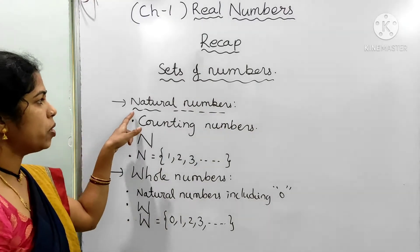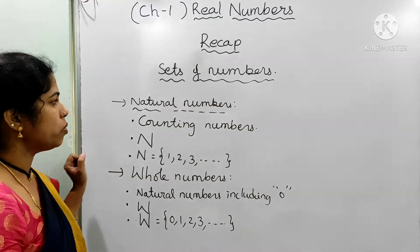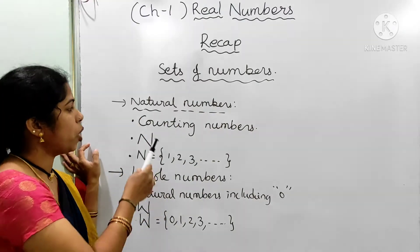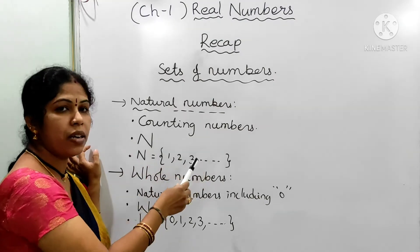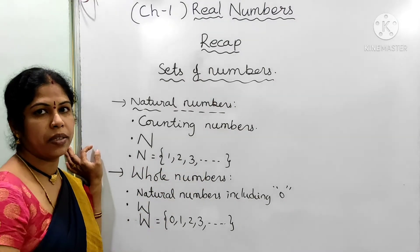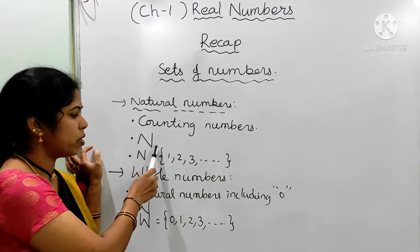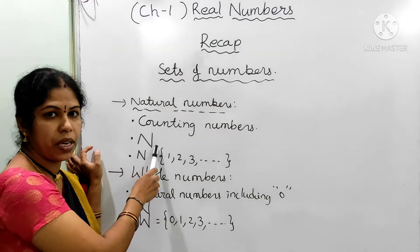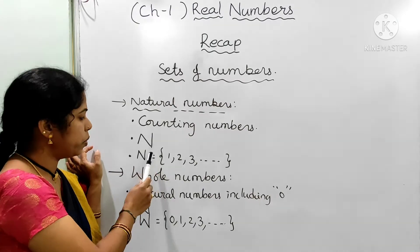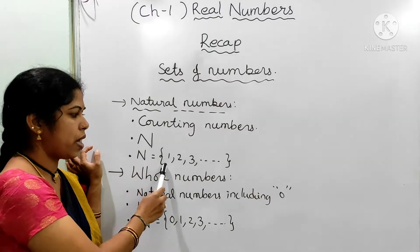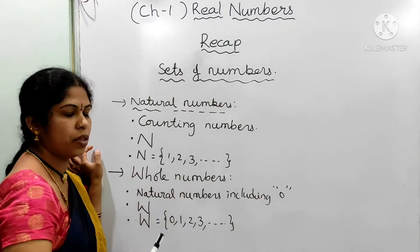You learnt about natural numbers. What are natural numbers, children? Counting numbers are natural numbers, and natural numbers are denoted with N. You can write the set of natural numbers as shown.